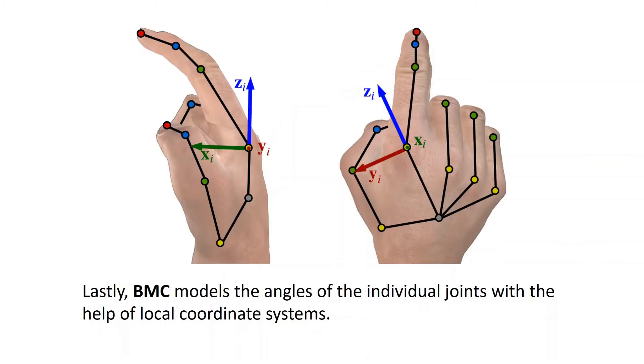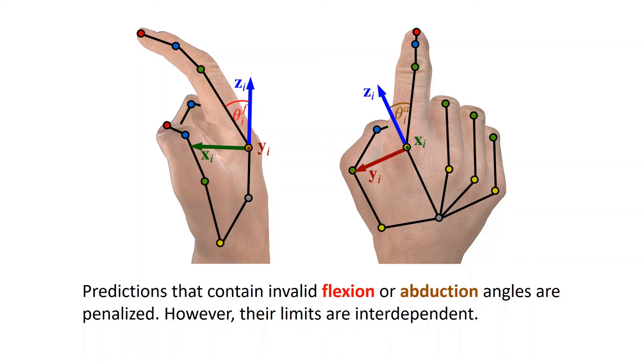Lastly, BMC models the angles of the individual joints with the help of local coordinate systems. Predictions that contain invalid flexion or abduction angles are penalized.